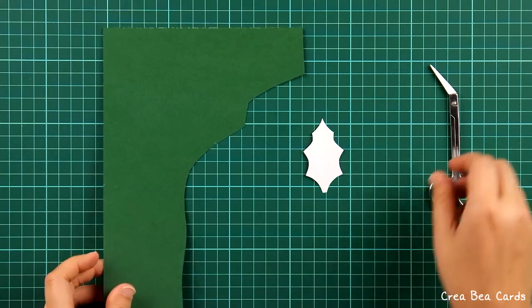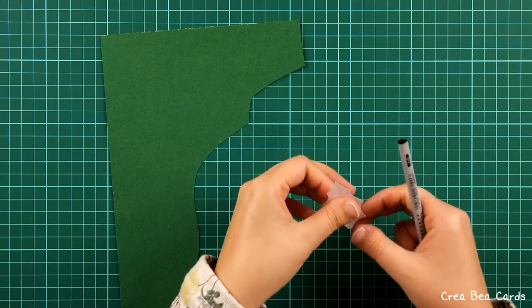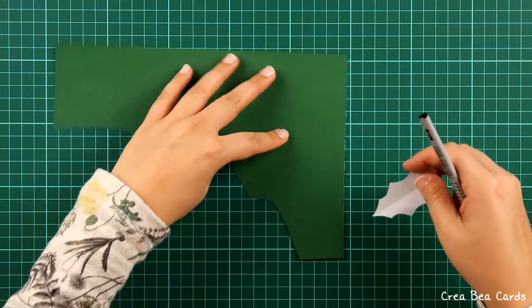Then put the shape on a sheet of green paper. Trace the shape twice with a pencil.